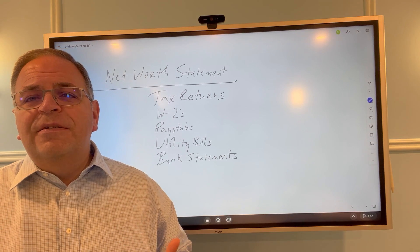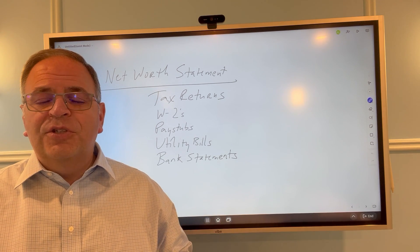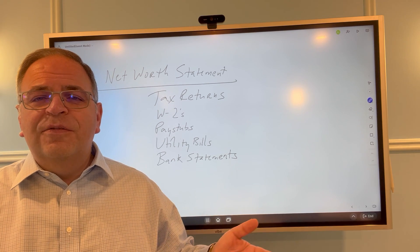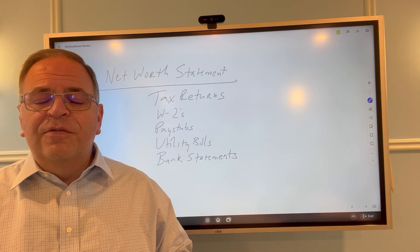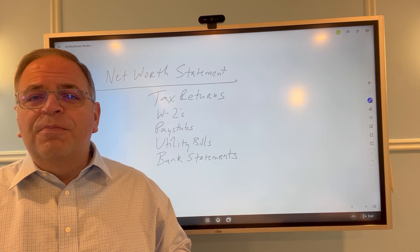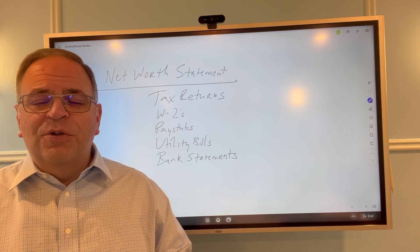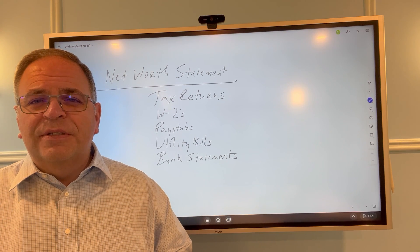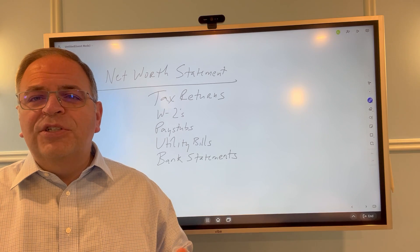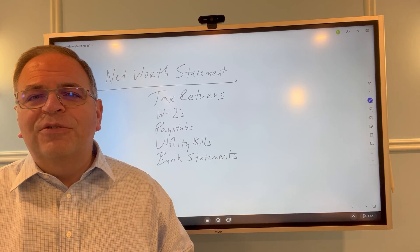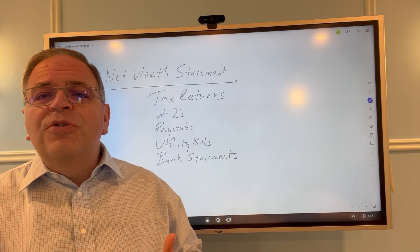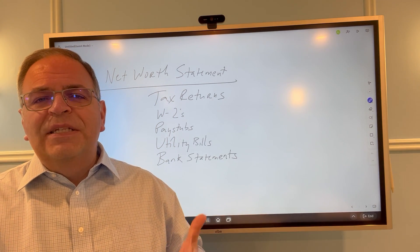You also need a collection of your utility bills so you understand what your expenses are — how much you pay for electricity, gas, heating, insurance, telephone, internet, mobile phone, co-pays for your medical insurance, your rent, your mortgage, your taxes, your homeowner's insurance, your car payments, and your car insurance. These are all forms and documents that you need to put together so that you can accurately and completely enter the information in a net worth statement.